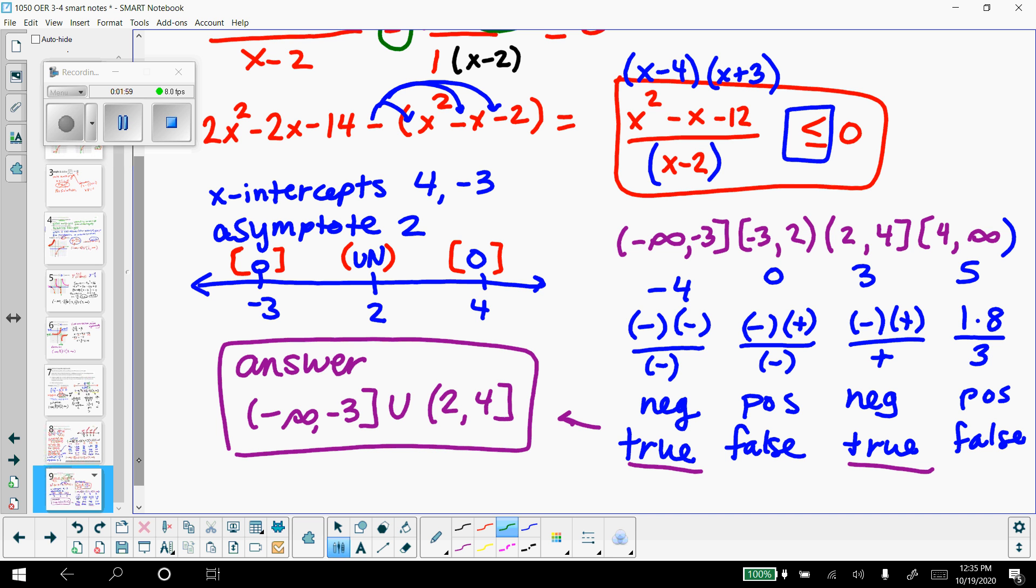And then we've got test values we can plug in, negative 4, 0, 3, and 5. I plugged those into this modified problem, less than or equal to 0.